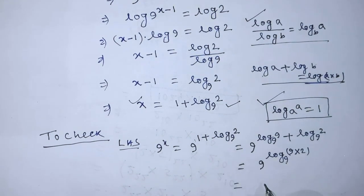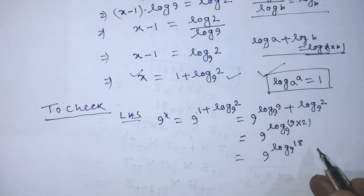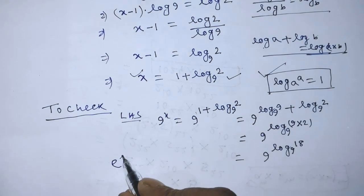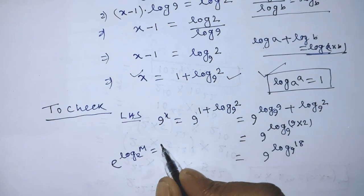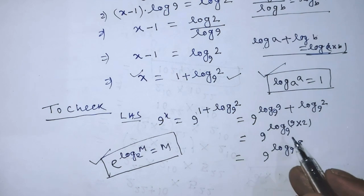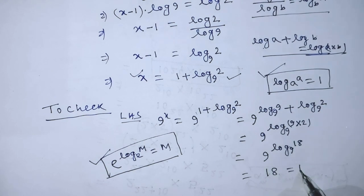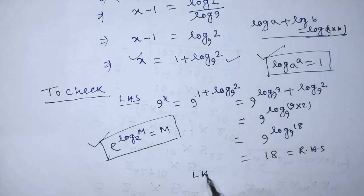Now we can write 9 to the power log of 18 to the base 9. To simplify this logarithmic form, we apply the formula: e to the power log of m to the base e is equal to m. According to this formula, we can write 18. That is the right hand side. So LHS is equal to RHS — proved.